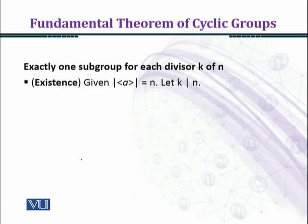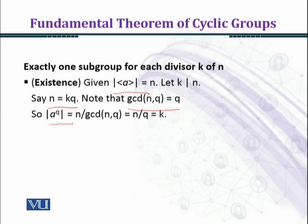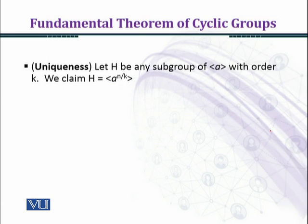Part C: exactly one subgroup for each divisor k of n. Existence: given that the order of the cyclic group generated by a is equal to n, let k divide n. By the definition of divisibility we have n equal to kq for some integer q. Note that gcd(n, q) equals q, so we get the order of a^q equal to n over gcd(n, q), which equals n over q, and finally equals k. Thus there exists a subgroup of order k, namely a raised to the power n over q.